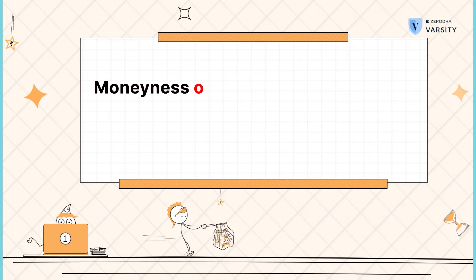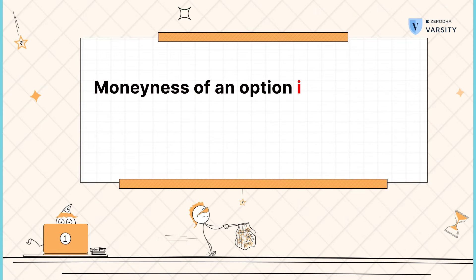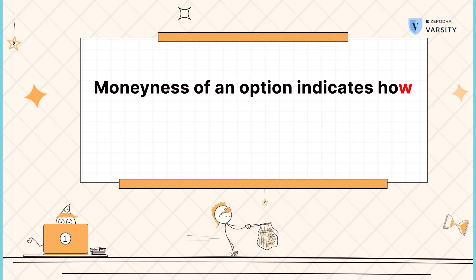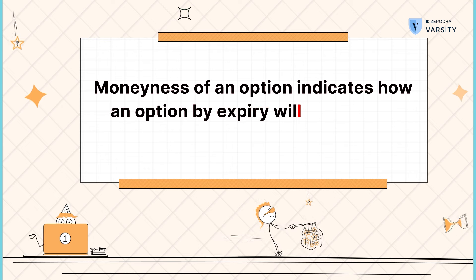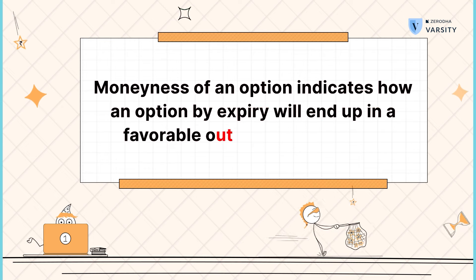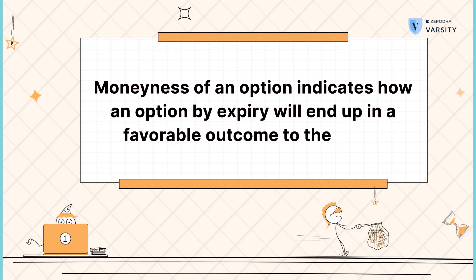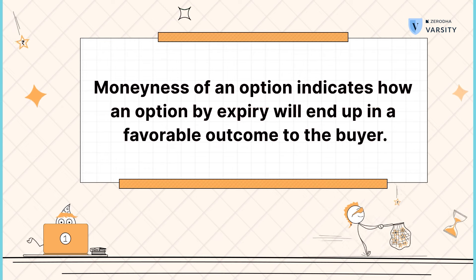The moneyness of an option indicates how an option by expiry will end up in a favorable outcome to the buyer. Now, let's keep the call option buyer in perspective.